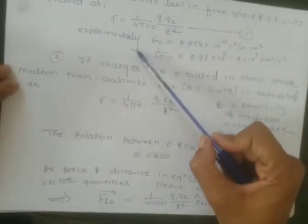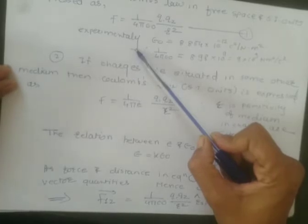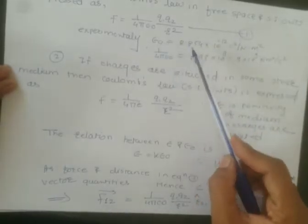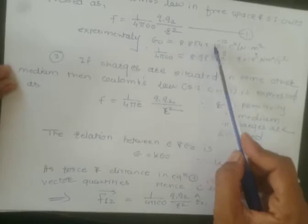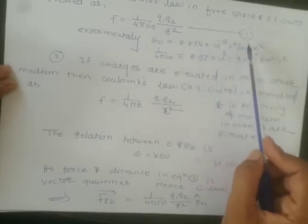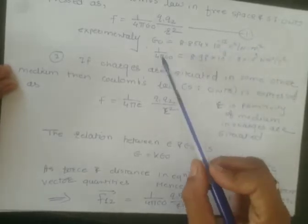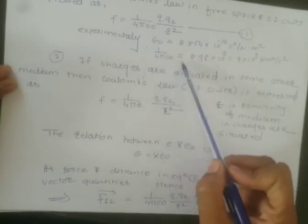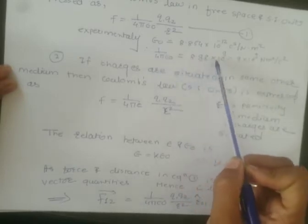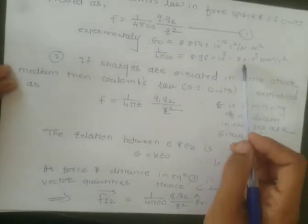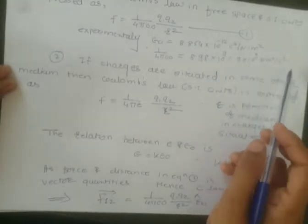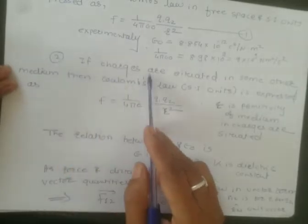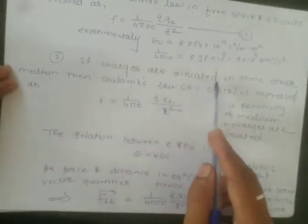Experimentally we find the value of ε₀ as 8.854 × 10⁻¹² whereas 1/(4πε₀) is equal to 8.98 × 10⁹, approximately 9 × 10⁹ N·m²/C².